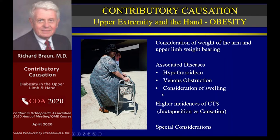We know there's a higher incidence of carpal tunnel syndrome in obese patients. If the BMI is getting up toward 40, all sorts of bad things happen. But we don't know whether this involves juxtaposition or causation.